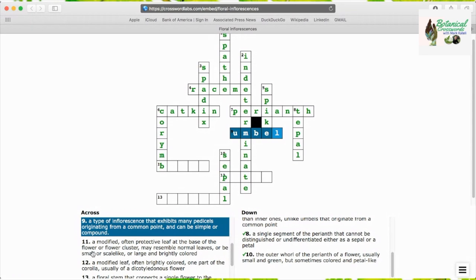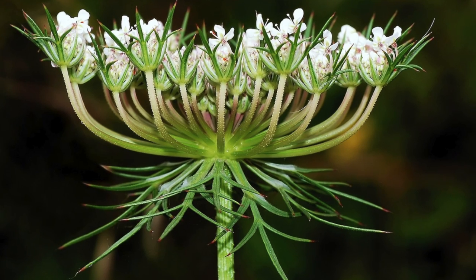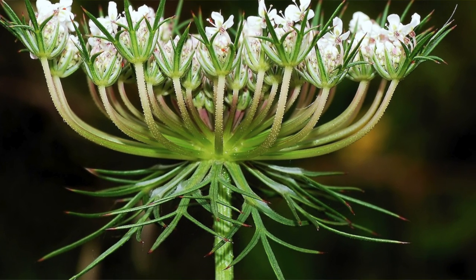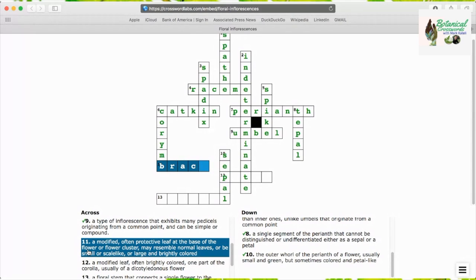Umbel is the next answer, a type of inflorescence that exhibits many pedicels originating from a common point that can be simple or compound, such as this picture of a carrot flower.